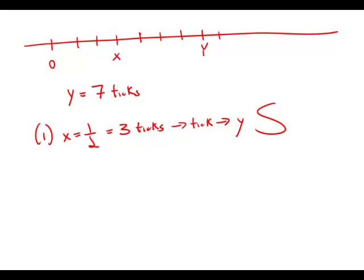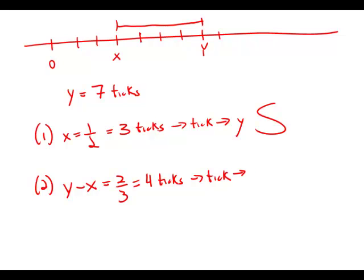Now forget about statement one. Focus only on statement two. Statement two tells us that y minus x is two-thirds. So this distance right here, the distance between y and x, is two-thirds. Of course, that's four ticks. So two-thirds is four ticks. We could figure out from that the length of a tick, and we could figure out the size of y.